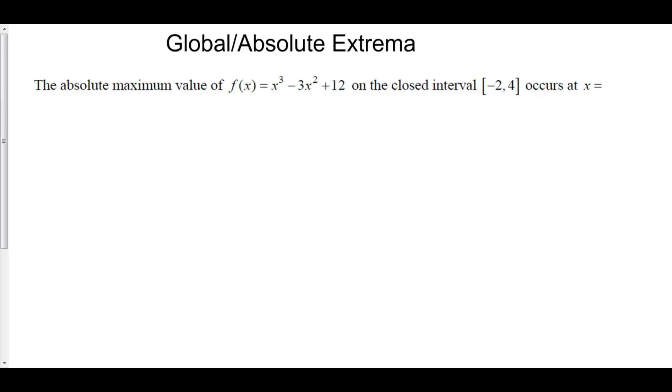To determine the global or absolute extrema, we first are going to find the critical points, then use our line analysis to inspect those critical points to ensure that they are in fact extrema, and then we'll see which one's the highest and which one's the lowest.